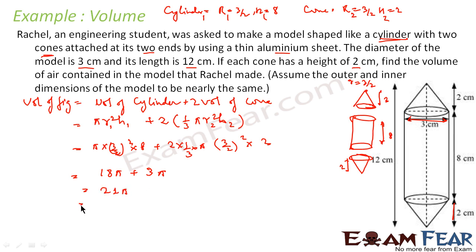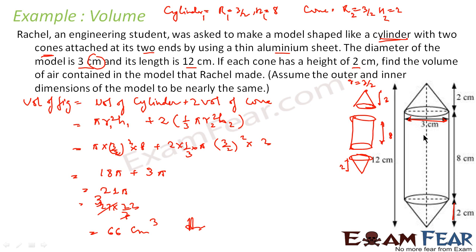We can express this as 21 × 22/7, which gives 3 × 22 = 66. So the volume is 66 cm³. To summarize: this figure is composed of two cones and one cylinder. Volume of figure equals volume of cylinder plus volume of cone one plus volume of cone two. Substituting the values of R and H, the answer is 66 cm³.